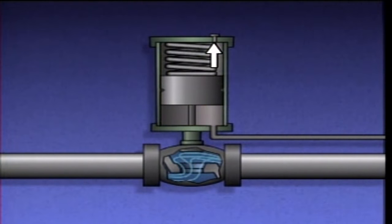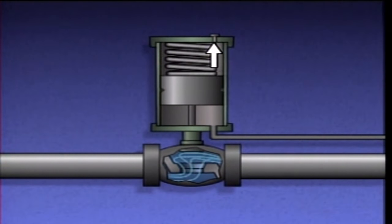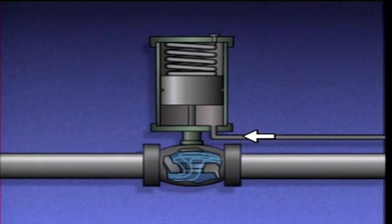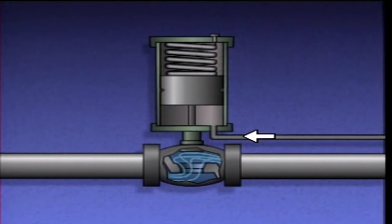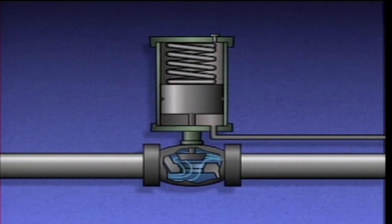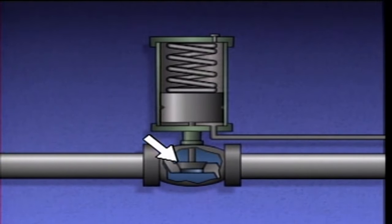Air on the other side of the piston leaves the cylinder through an air vent. When air pressure is reduced, the spring expands, moving the piston in the opposite direction and closing the valve.